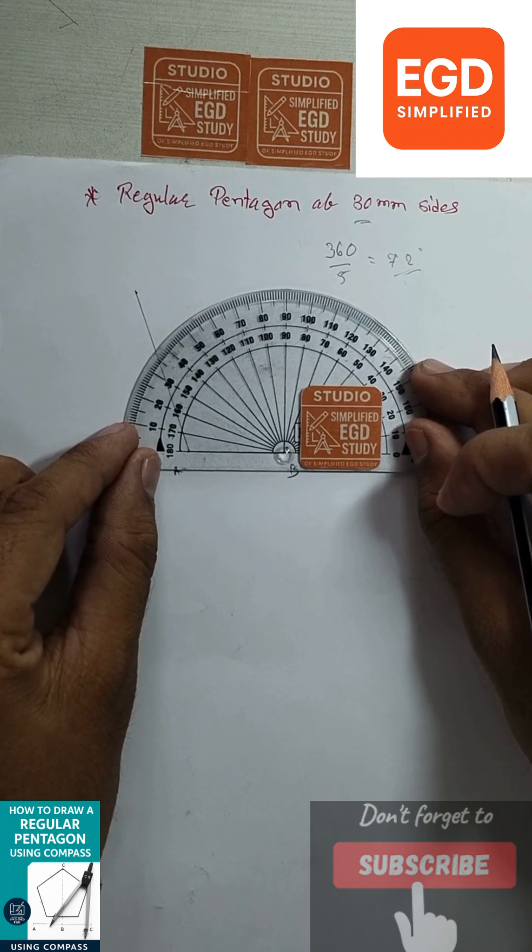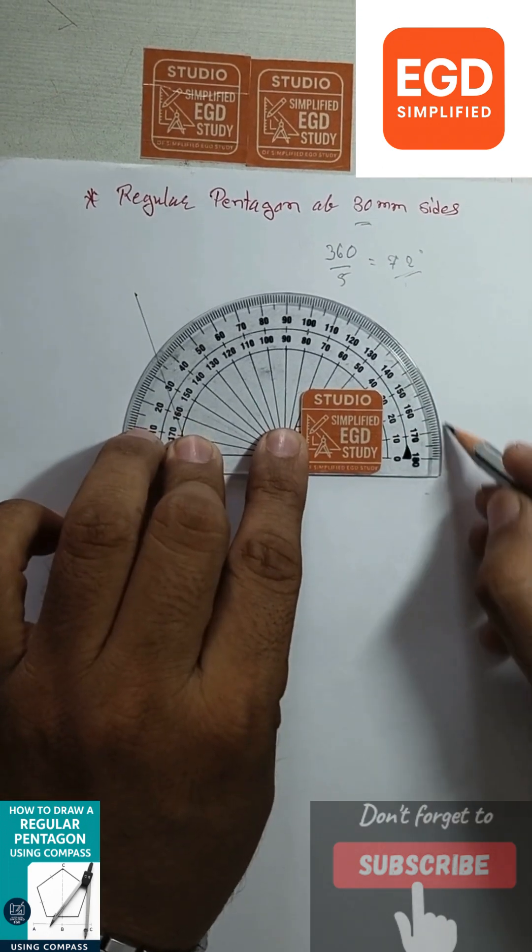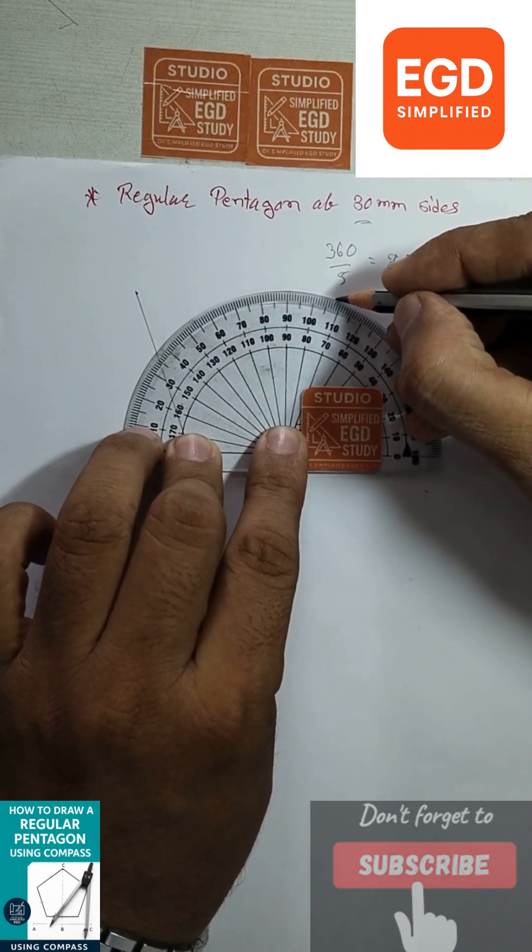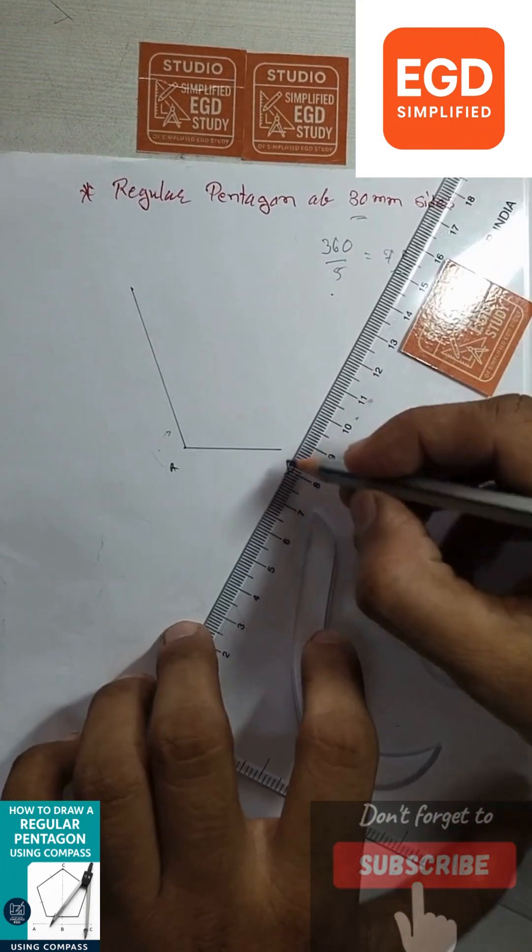Same process from point B. Here 72 degrees will be from this side. Connect the points.